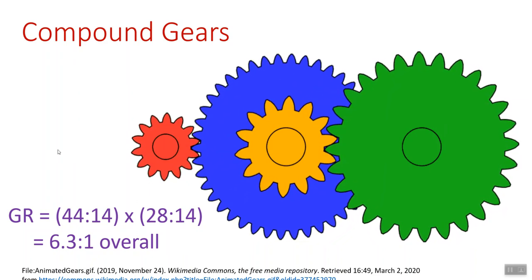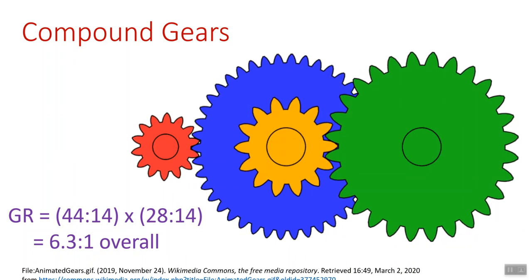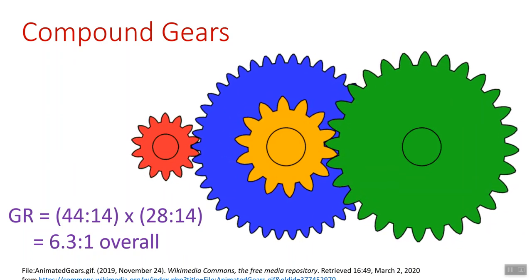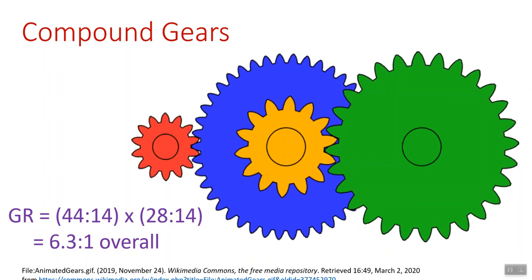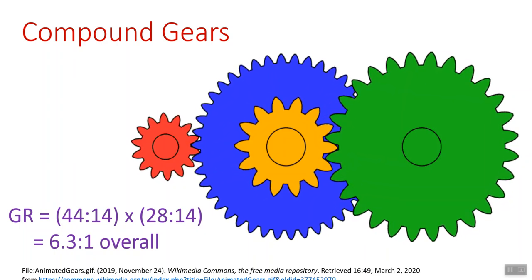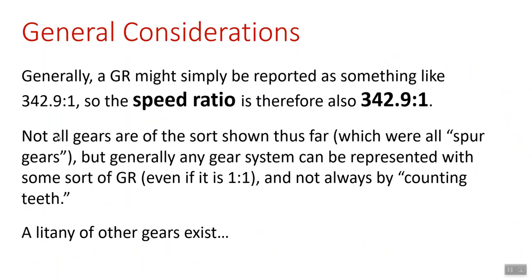Hopefully you can see the notion here that there can be some fairly complex arrangements. In fact, there are some gearboxes with dozens or hundreds of gears. The gearboxes in your project kit are extremely clever — depending on how you fit the shafts and gears together in their interconnected relationship, you can get a surprising variety of different gear ratios depending upon your needs. A gear ratio might simply be reported as something like 342.9 to 1 — it could be just literally a black box with a shaft coming out one end and a motor on the other. You put some power in and it gives you that gear ratio, so the speed ratio is the same.